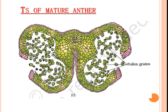As the anther grows, the microspore mother cells undergo meiosis and give rise to four haploid cells. These four cells are arranged in a tetrahedral manner, giving rise to a tetrahedral structure called a tetrad.